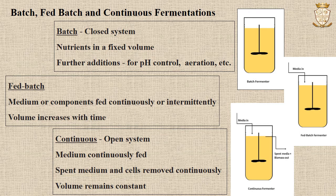Batch growth or batch fermentation involves a closed system where all the nutrients are present at the start of the fermentation in a fixed volume. There may be further additions in a batch fermenter, but it usually limits to acids or bases added for pH control or the addition of gases for aeration.